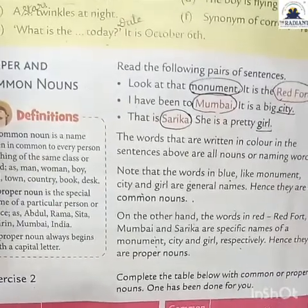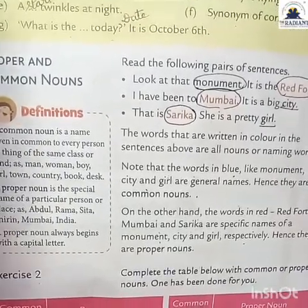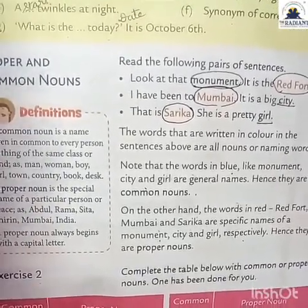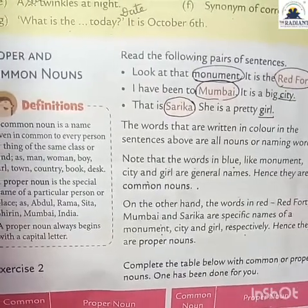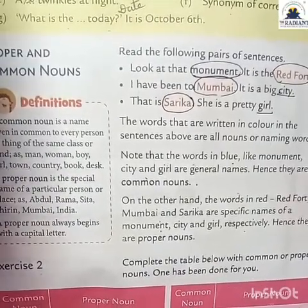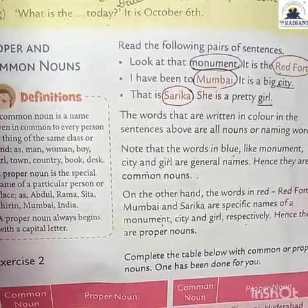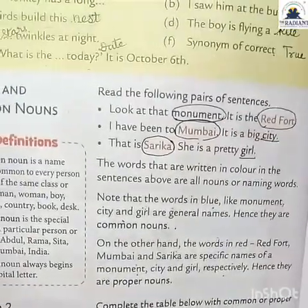Common noun 'country' — proper nouns are India, China, Nepal, Bhutan, America — you can write any country name. For the proper nouns Chennai and Hyderabad, the common noun is 'city' or 'place'.